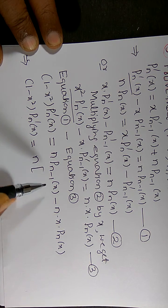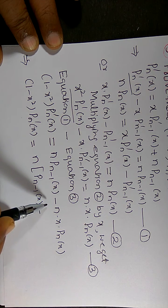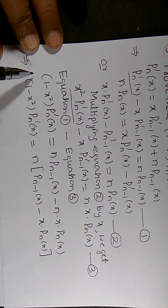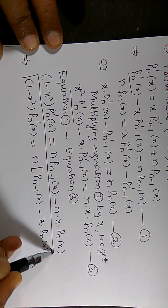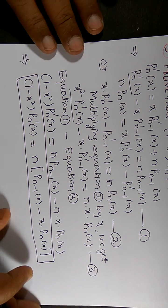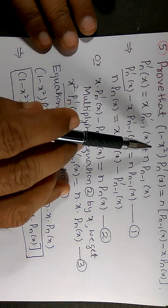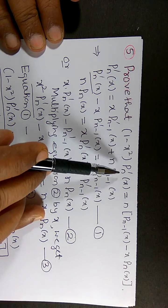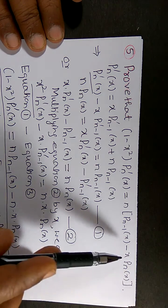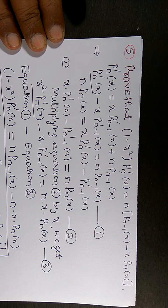So taking n as common, we get n times of Pₙ₋₁ of x minus x into Pₙ of x. This is the required equation. We can verify: 1 minus x squared into P suffix n single prime of x equals n times of Pₙ₋₁ of x minus x into Pₙ of x. This is the required recurrence relation. Thank you.